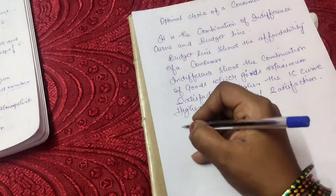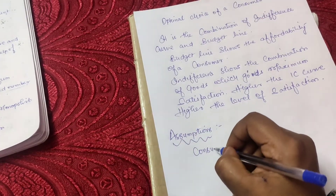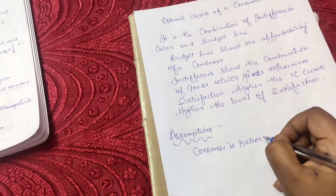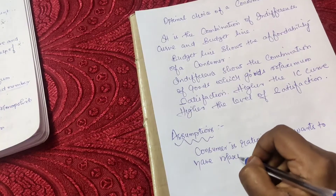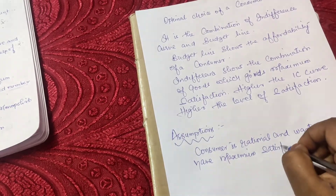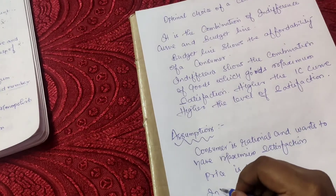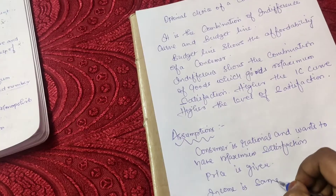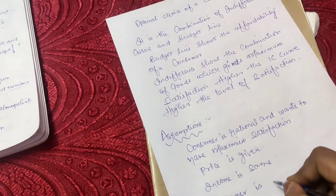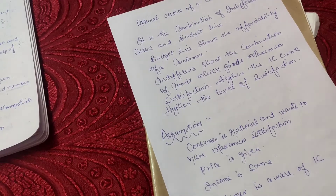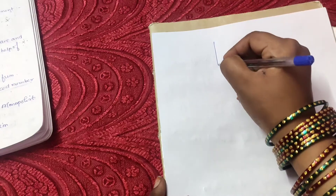There are certain assumptions. The assumptions are: the consumer is rational and wants to have maximum satisfaction. Price is given and income is also given. The consumer is aware of the indifference curve. These are the certain assumptions.